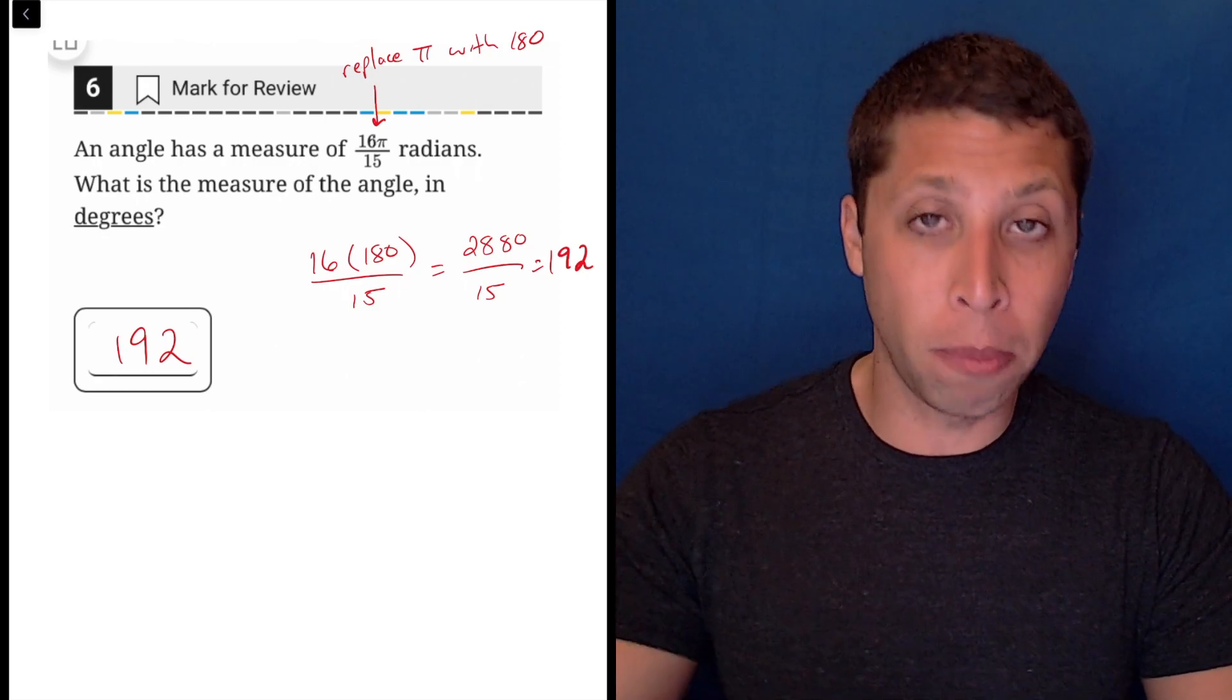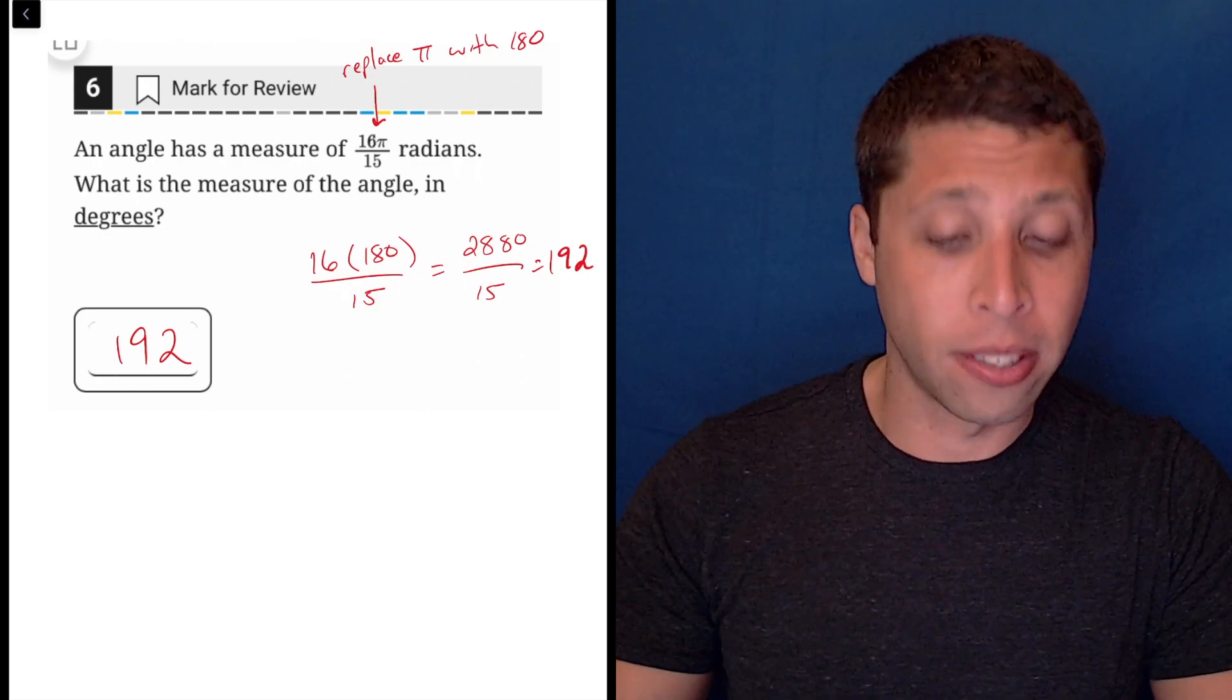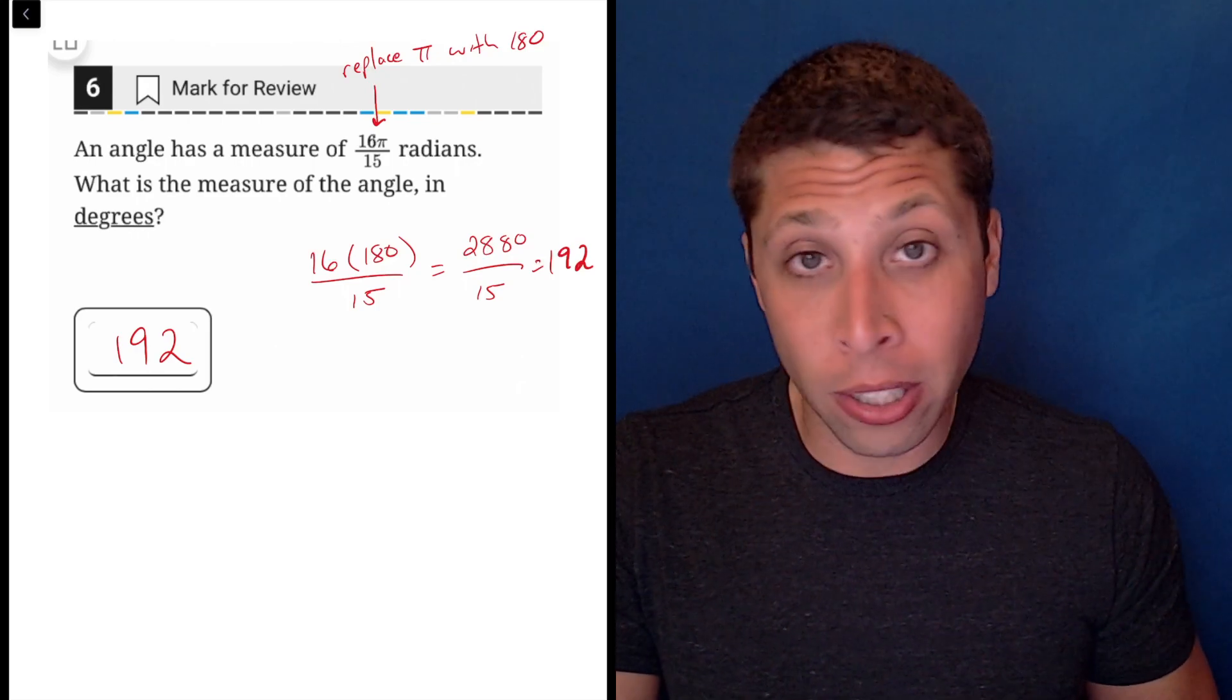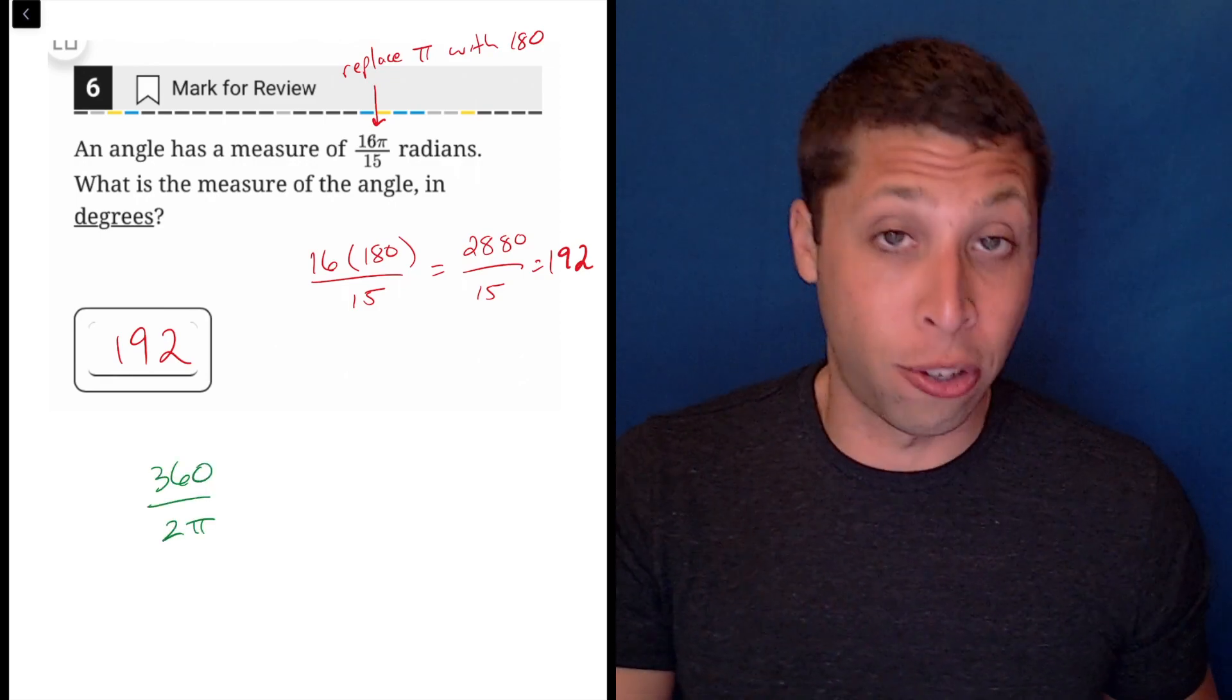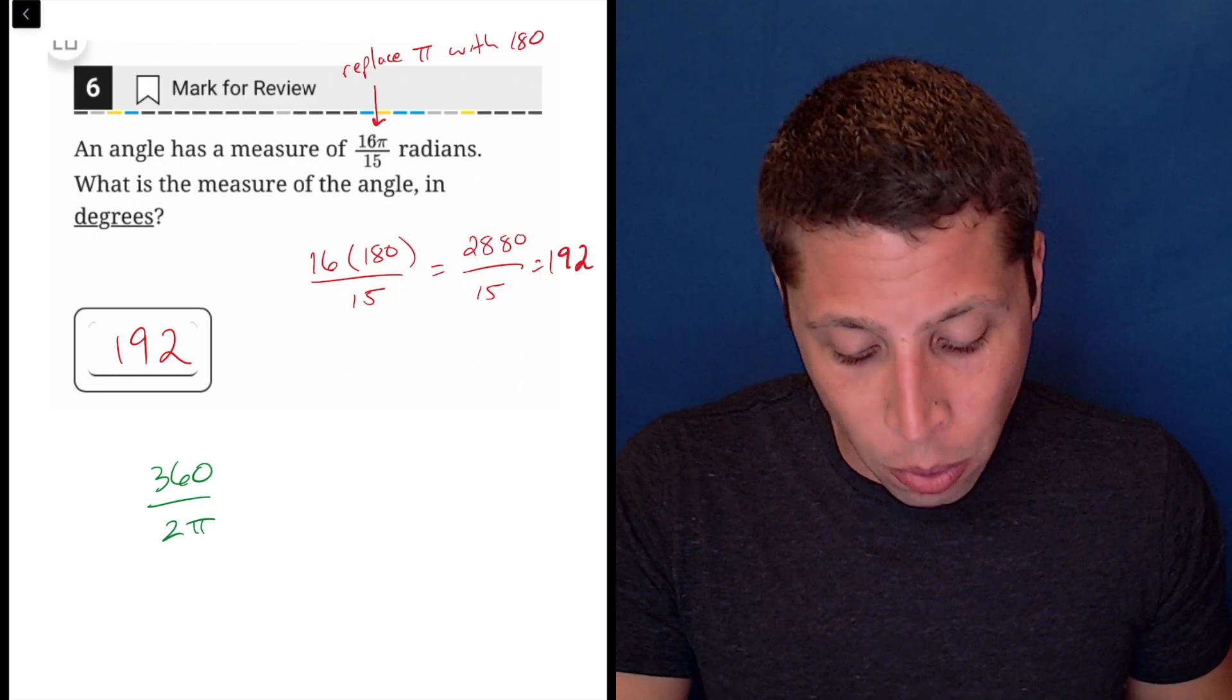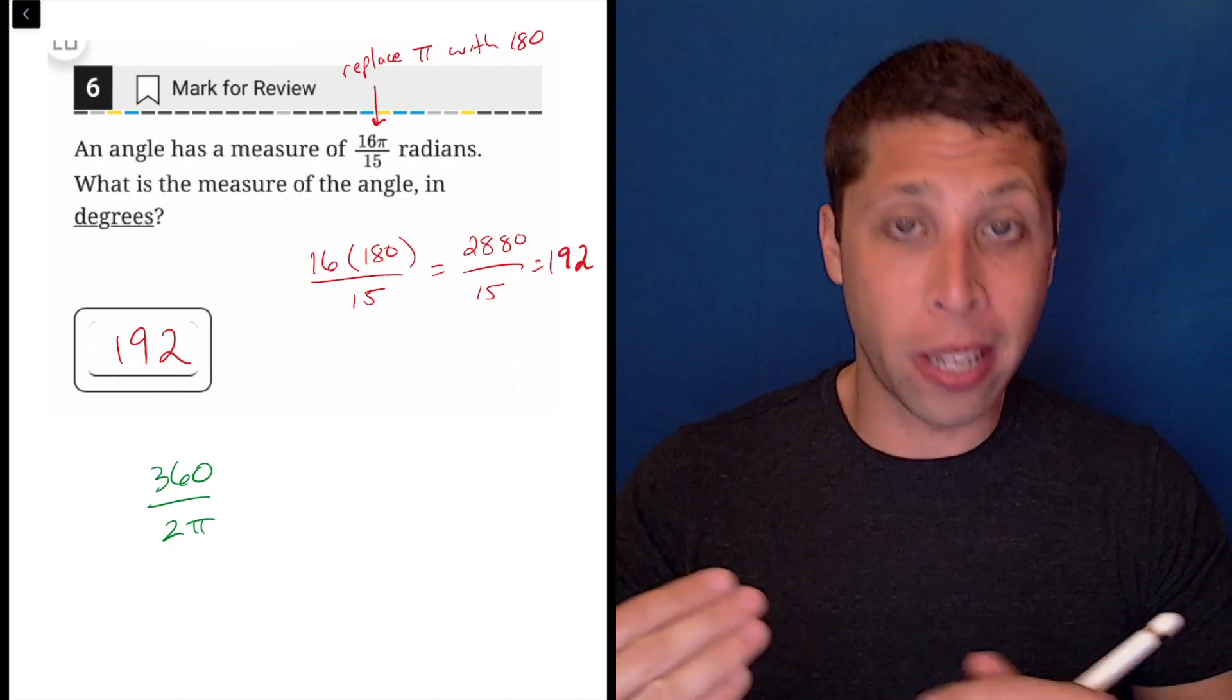Because the SAT formula reference chart that's available on every math section for the test is going to tell you that there are both 360 degrees in a circle and 2 pi radians in a circle, or in a full angle, full way round. So basically we can use that as a proportion, because the relationship is going to be consistent.